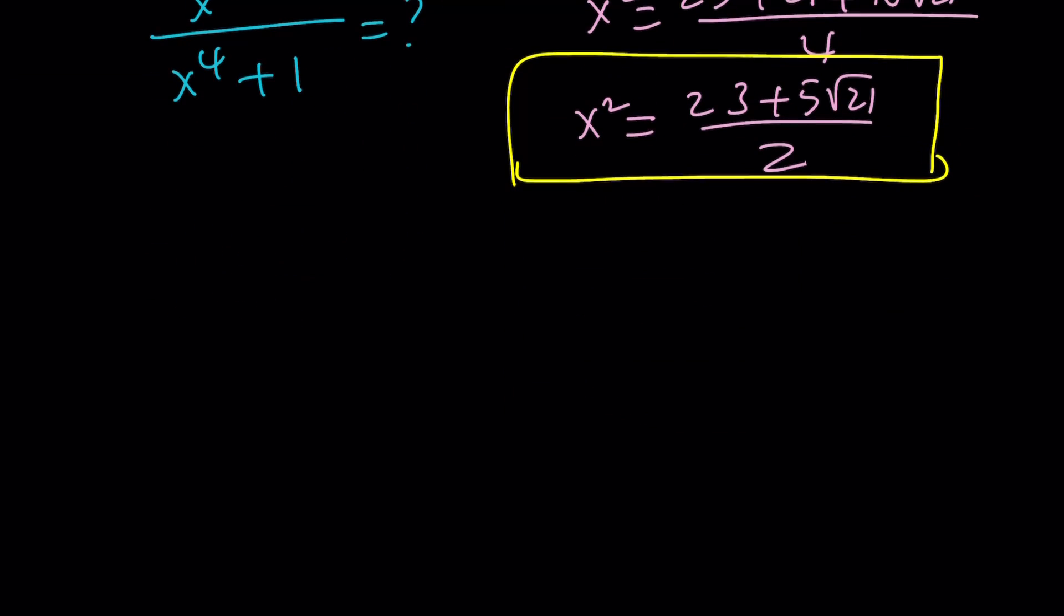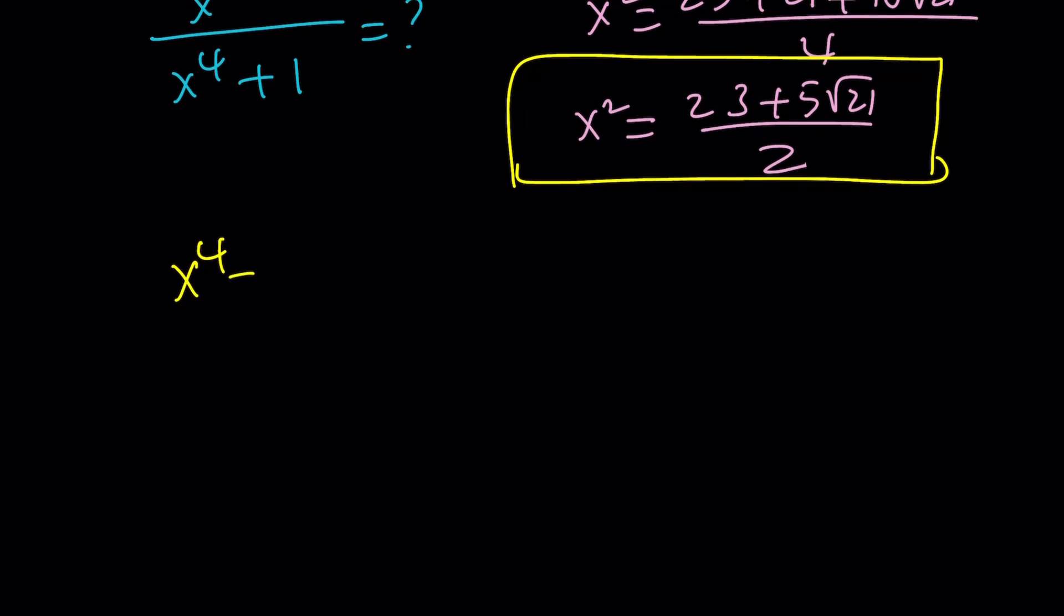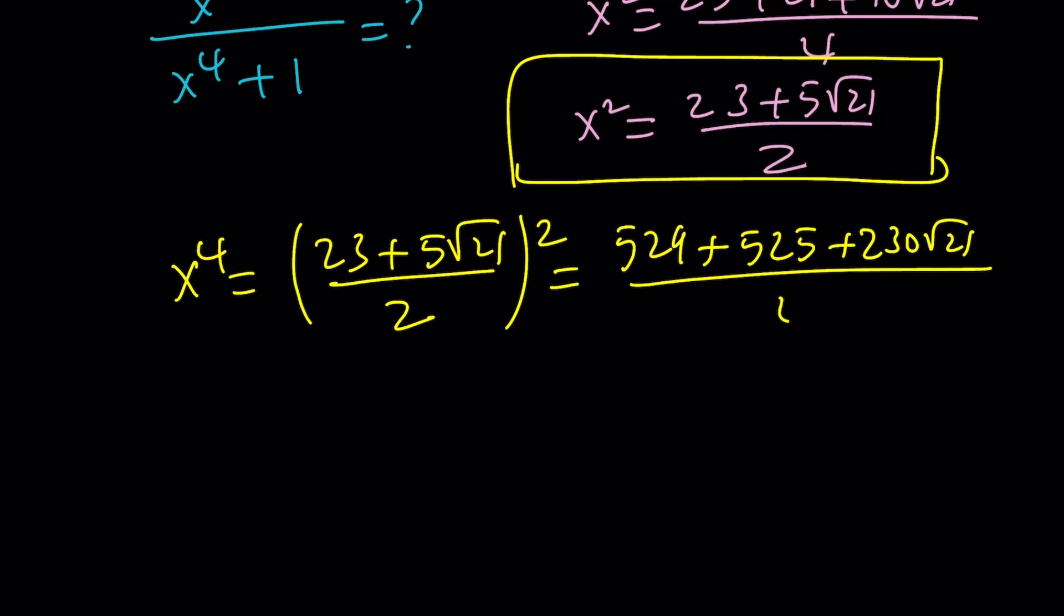And then let's evaluate x to the 4th. x to the 4th is just going to be x squared squared. And then you can square this. Wow. That's a lot of work. 23 squared I think is 529. It should be 25 times 21, which should be 525. And then plus 23 times 5 times 2, which is 115. That's 230 root 21, all over 4. And good luck simplifying that. As you know this is going to be incomplete. I told you. This is a lot of work. But you can still do it and let me know.